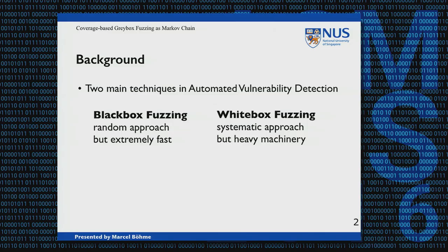Let's take a step back and look at the main techniques in automated vulnerability detection. On the one hand, you have something called black box fuzzing, which is a random approach where you essentially generate random inputs for a program and see whether it crashes. It's extremely fast because there's no program analysis — you can think of the order of 500 to 5,000 executions per second.